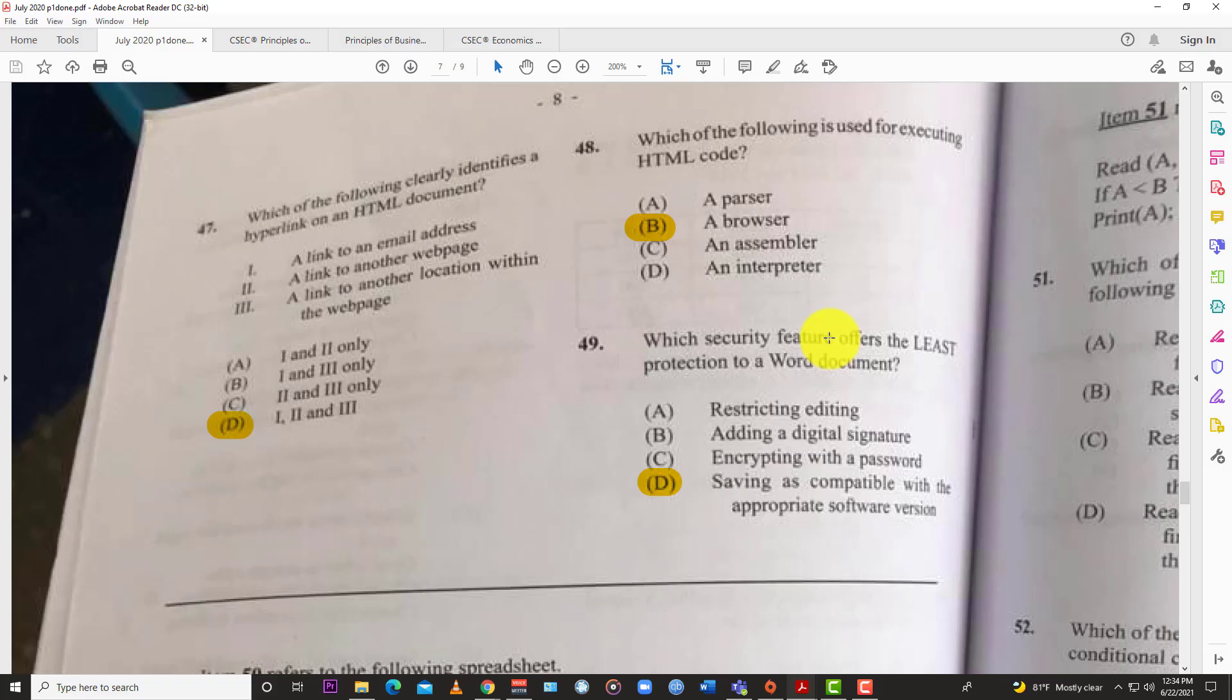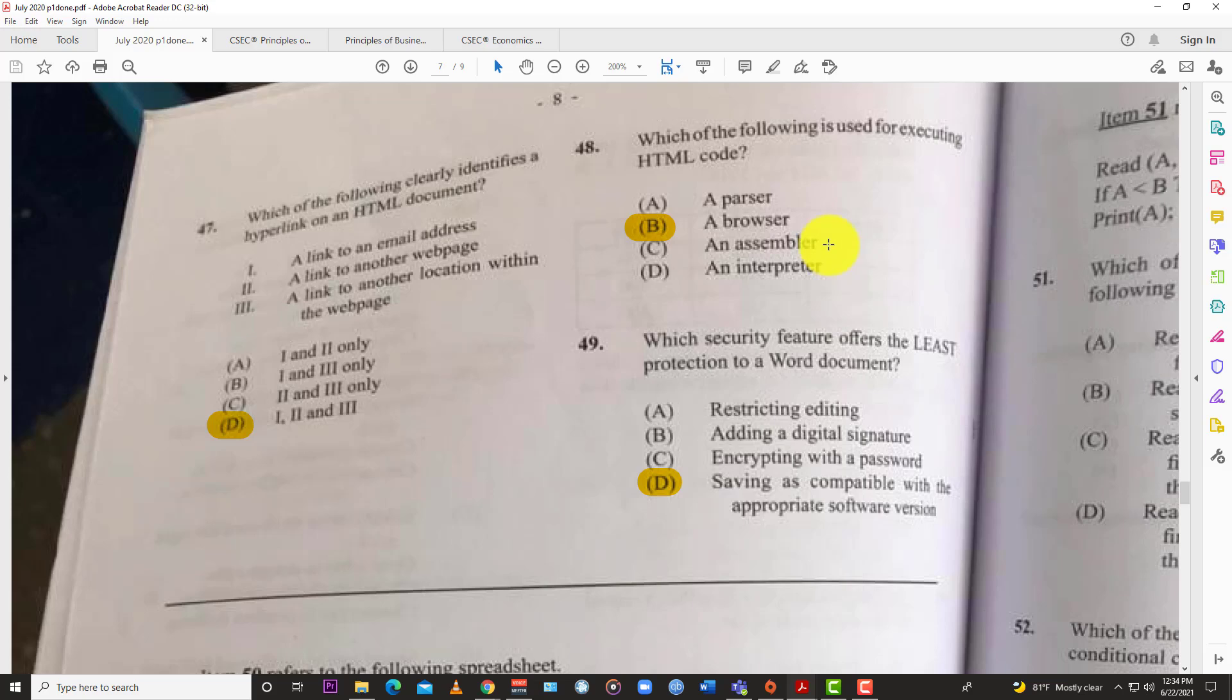Question 48: Which of the following is used for executing HTML code? Of course the answer is a browser. That's where you go—your Chrome or your Bing or whatever—that's normally written in HTML.